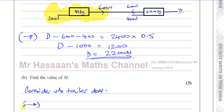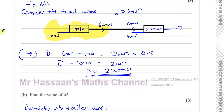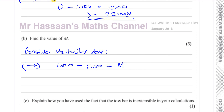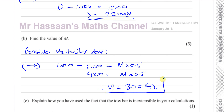Using F equals ma on the trailer: the forces in the direction of acceleration give 600, minus the resistance of 200 against acceleration. That's the resultant force, equal to M times 0.5. So 400 equals M times 0.5. Dividing both sides gives M equals 800 kilograms. And that's part B done — a very simple question.